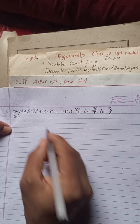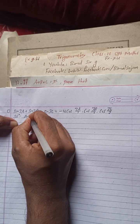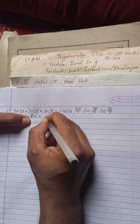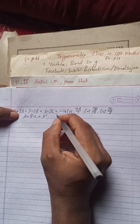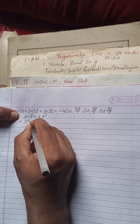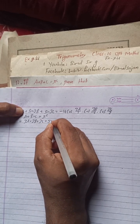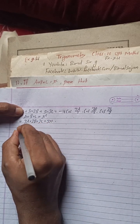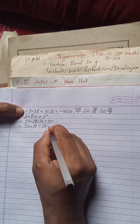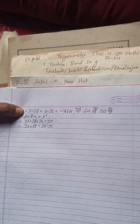Now let's begin. We are given that a + b + c = π radians. If I multiply both sides by 3, this will give us 3a + 3b + 3c = 3π radians. This implies 3a + 3b = 3π - 3c.